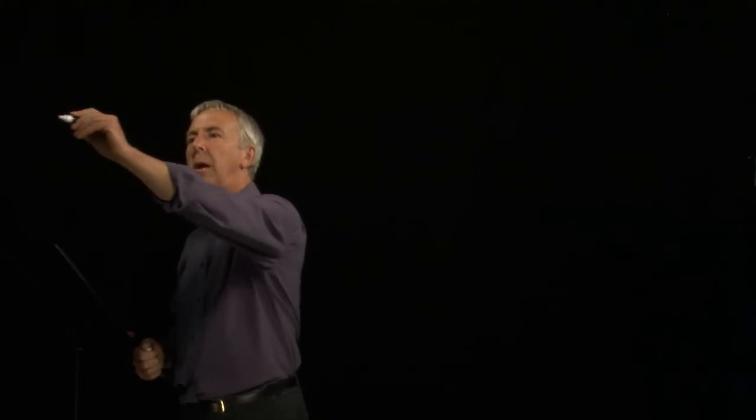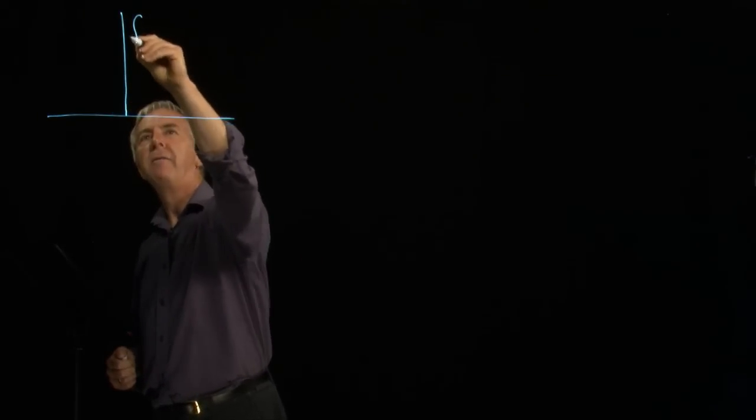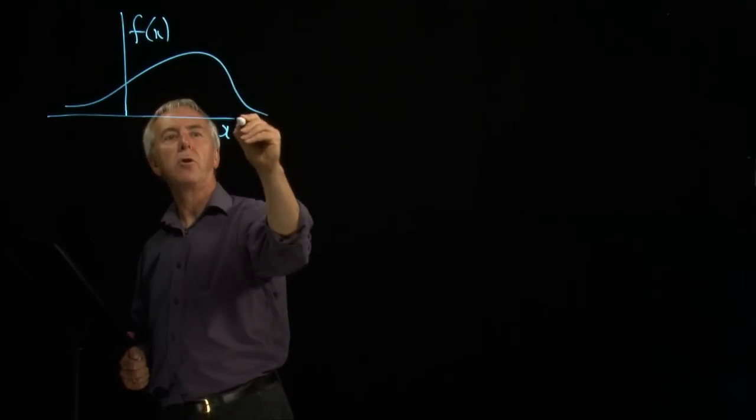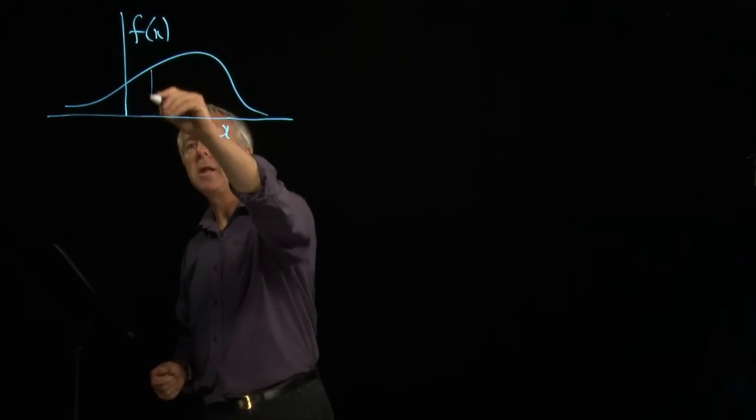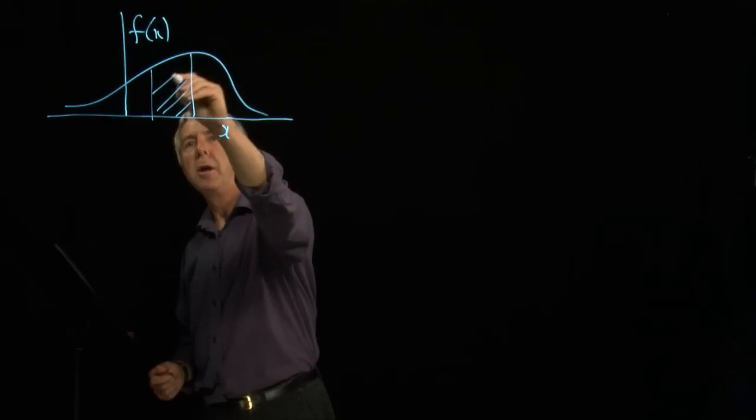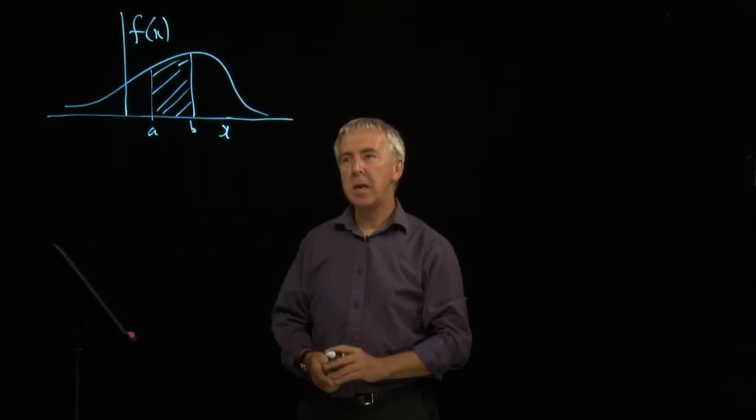As we have seen, when we have a continuous random variable, we can describe probabilities using the probability density function. We have a graph f(x) and we might have a density function like this, and we find probabilities by finding the area under the graph. So the probability that x is between a and b is given by that area.